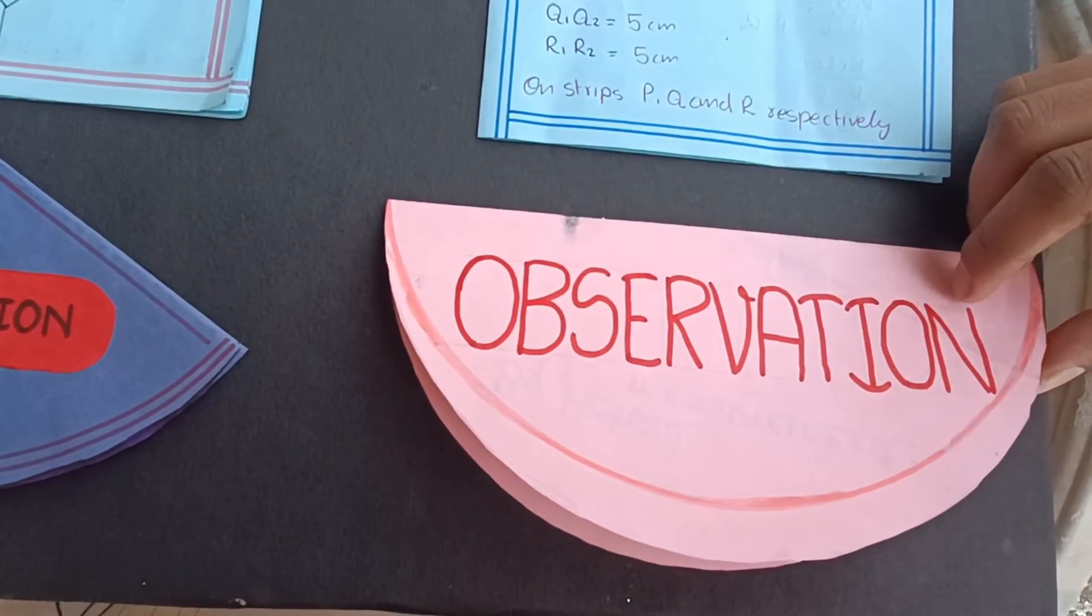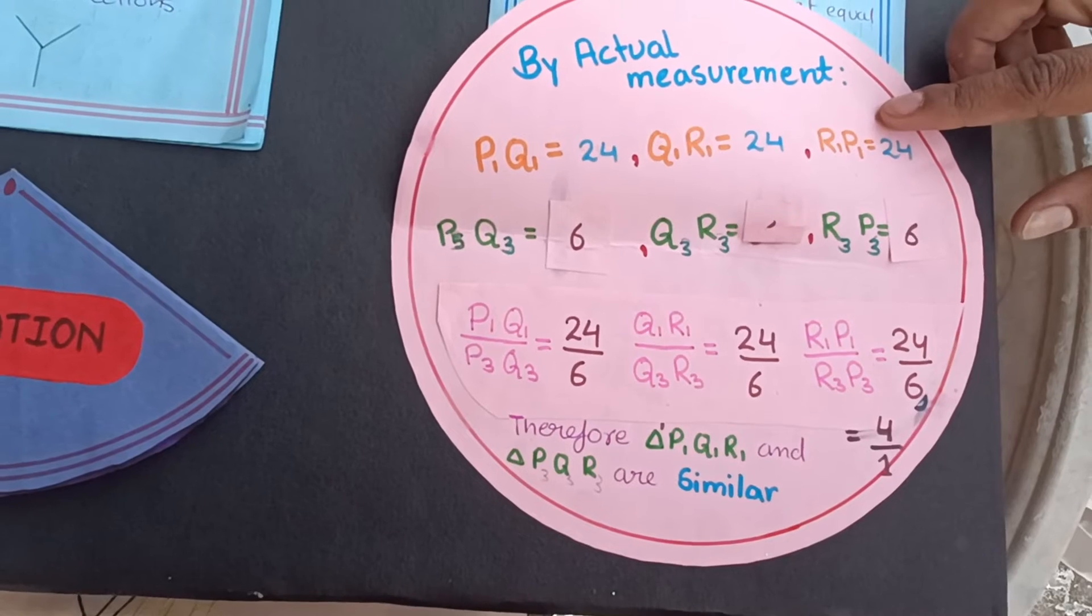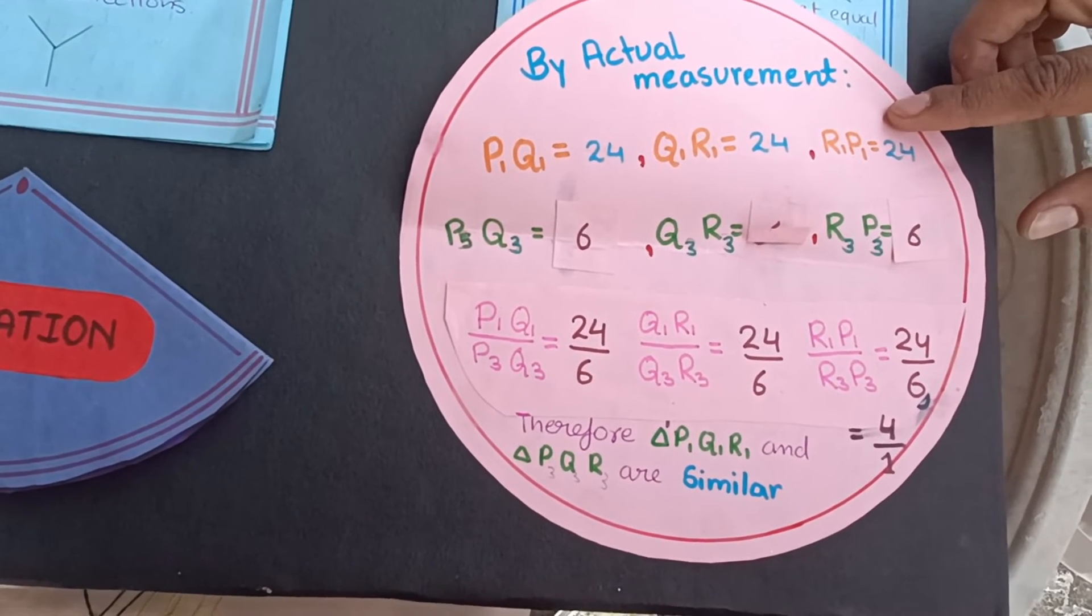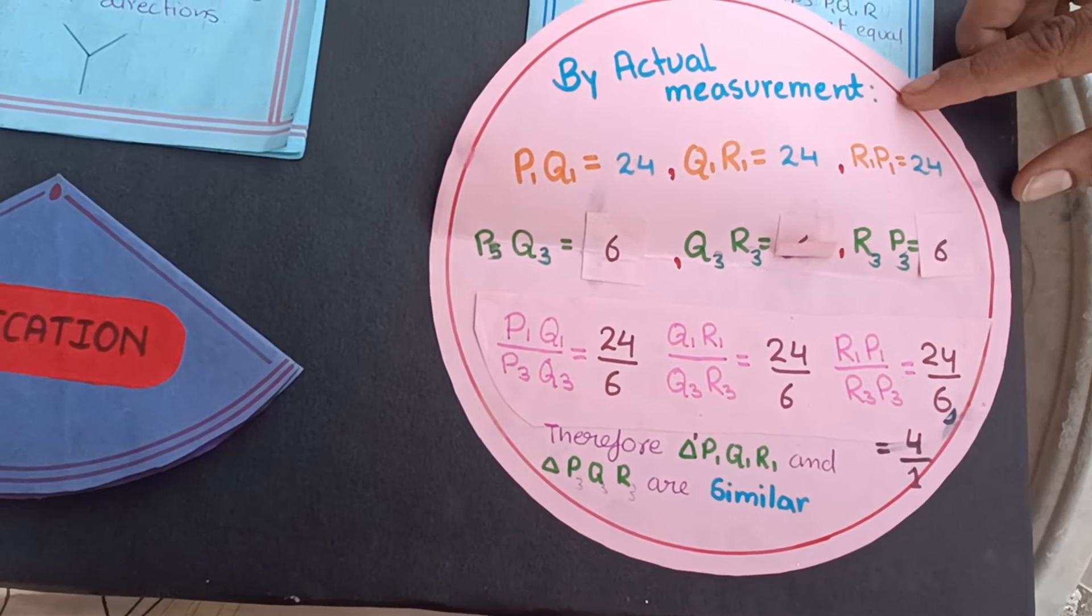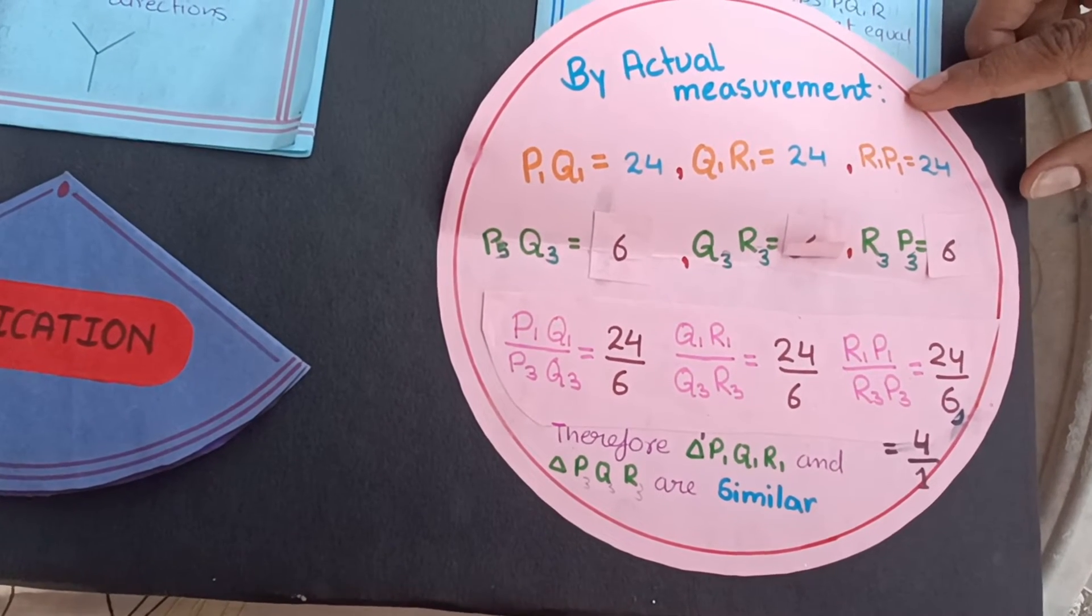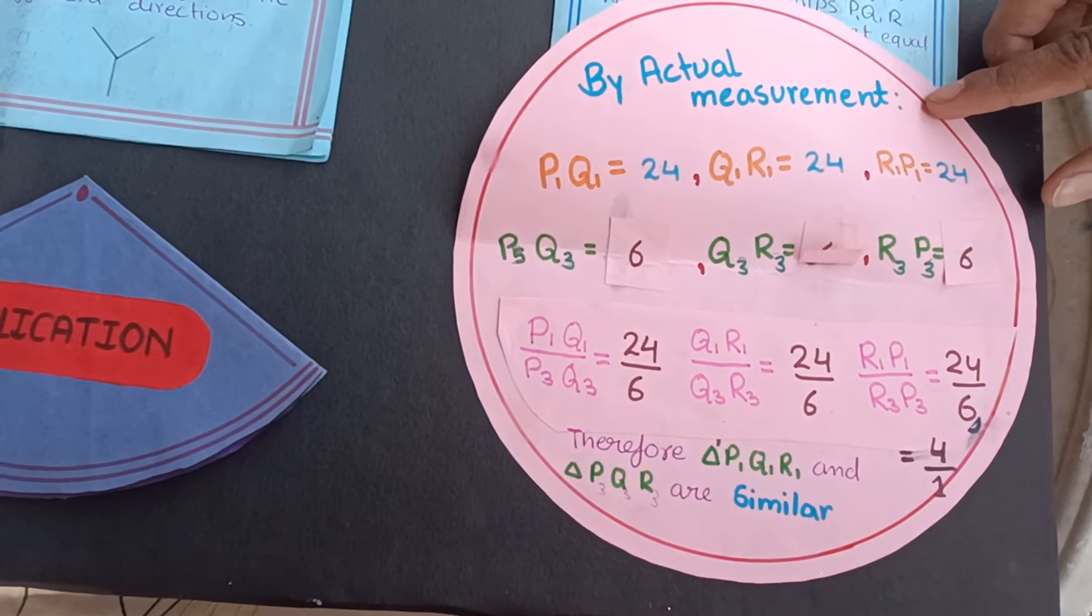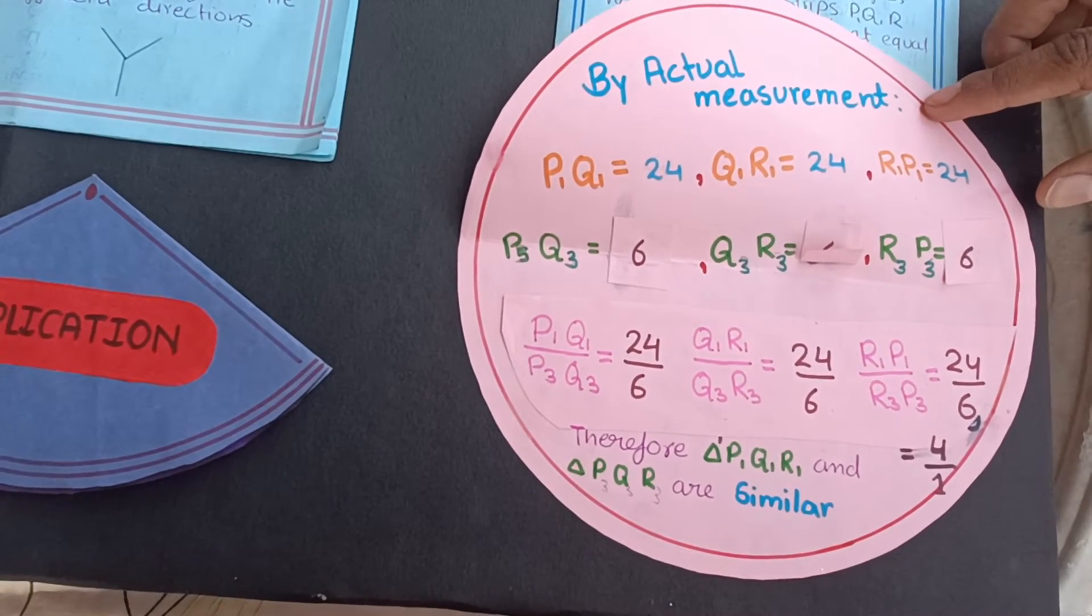Observation of this activity is, by actual measurement, we get P1Q1 equals 24, Q1R1 equals 24, R1P1 equals 24, and P3Q3 equals 6, Q3R3 equals 6, and R3P3 equals 6.